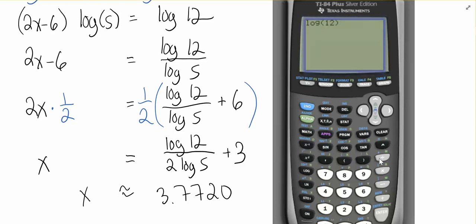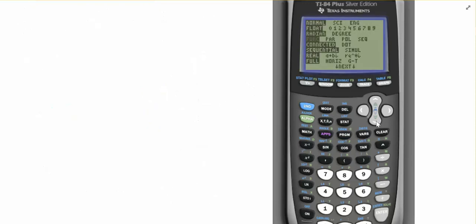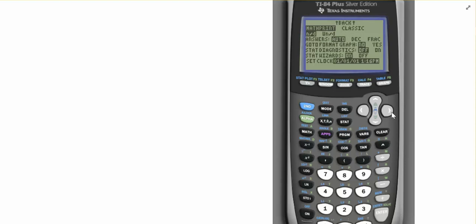So if we do log 12, divide by, here's the important part. We need parentheses for our 2 log 5. Those parentheses say all of this is in the bottom together. Let me actually change this over to classic so that you can see the whole thing at the same time together.